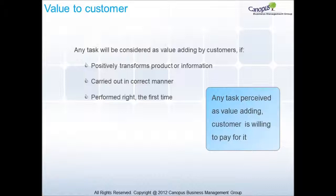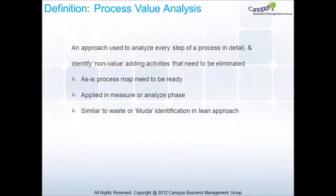Let's now see the definition of process value analysis. Process value analysis is an approach used to analyze every step of a process in detail, and spot non-value adding activities that need to be eliminated. Once the as-is process maps are ready, this analysis can be performed. It usually occurs in the measure or analyze phase. This analysis is similar to Muda or waste identification in the Lean approach.